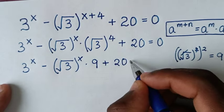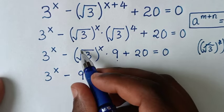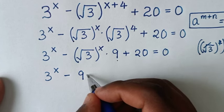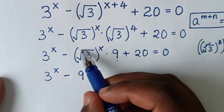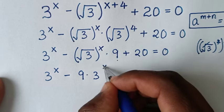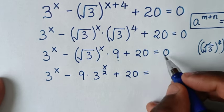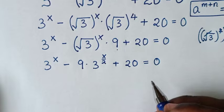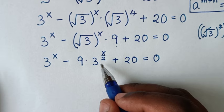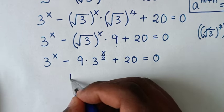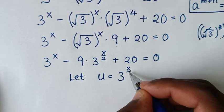In the next step, it will be 3^x minus 9 times 3^(x/2), then plus 20 is equal to 0. Here, √3^x is the same as 3^(x/2), because square root is the same as power of a half, and power of a half times x is power of x over 2. We will let u = 3^(x/2).